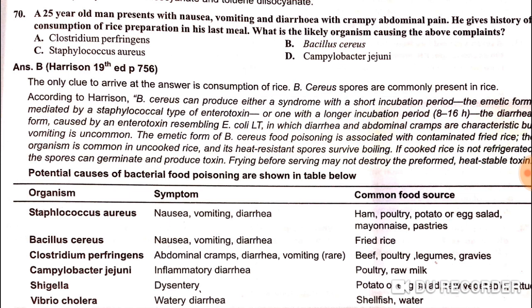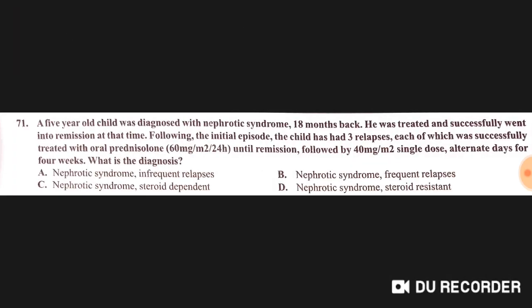A 25-year-old man presents with nausea, vomiting, diarrhea, and crampy abdominal pain. He gives a history of consumption of rice preparation the previous week. The likely organism causing this complaint is Bacillus cereus, which is commonly associated with rice.